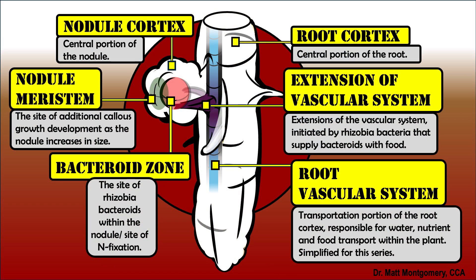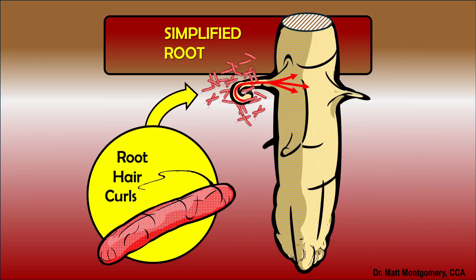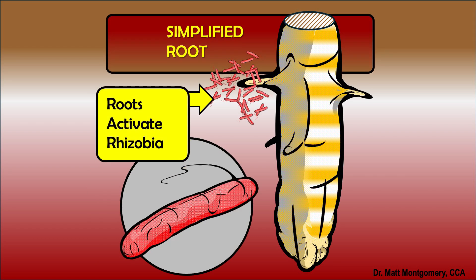The bacteria reside within these nodules, and those nodules form when soybean root hairs come near to those bacteria. When they come near, the bacteria send out little chemical signals that cause the growth and development of those root hairs to change. That root hair will curl back against itself, the bacteria will accumulate around that curled root, and they will form a little highway that leads into the cortex.